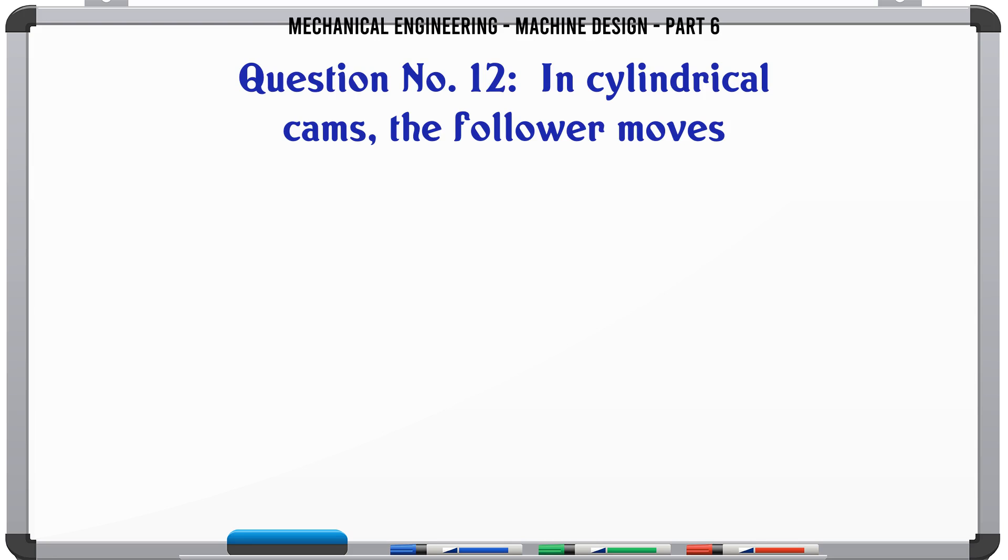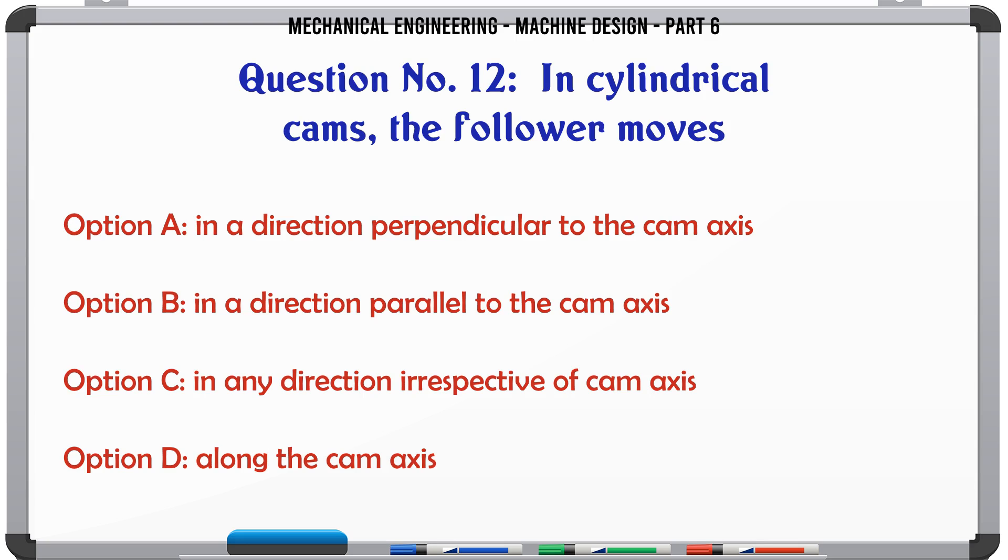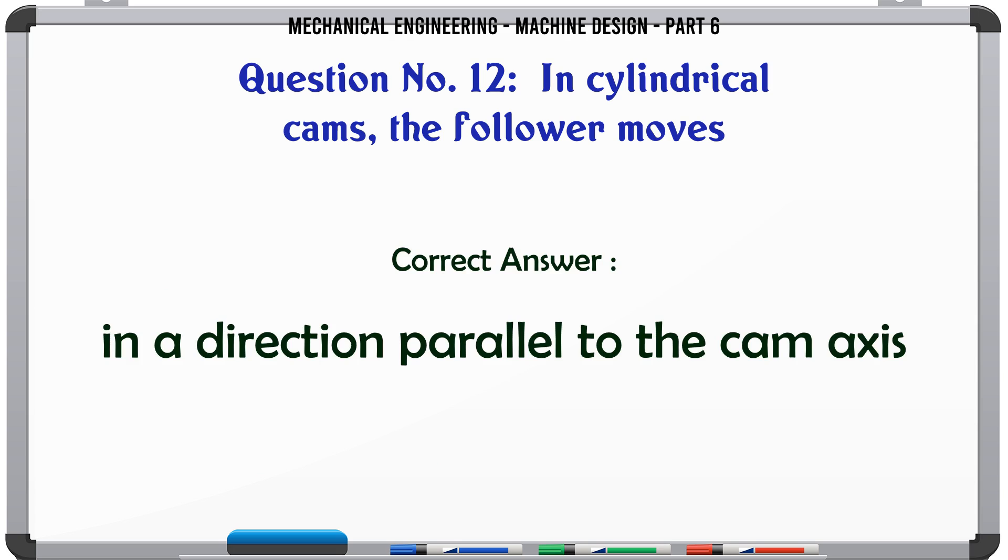In cylindrical cams the follower moves: A) in a direction perpendicular to the cam axis, B) in a direction parallel to the cam axis, C) in any direction irrespective of cam axis, D) along the cam axis. The correct answer is in a direction parallel to the cam axis.